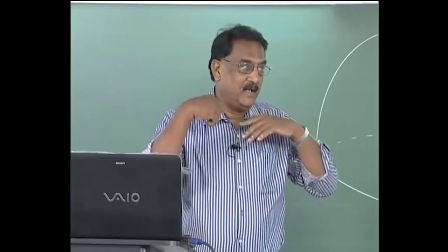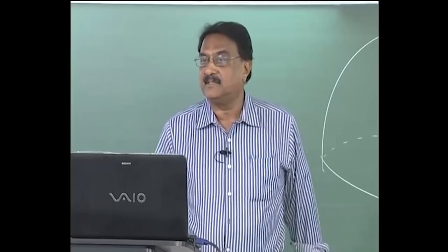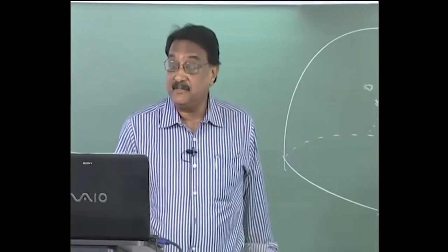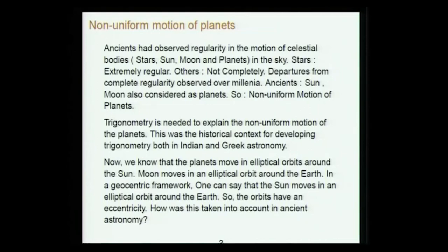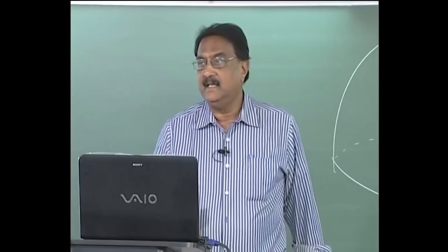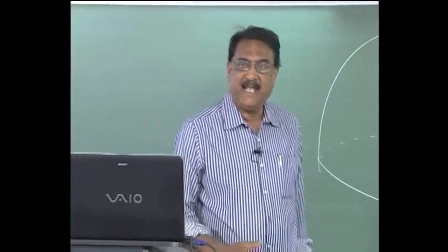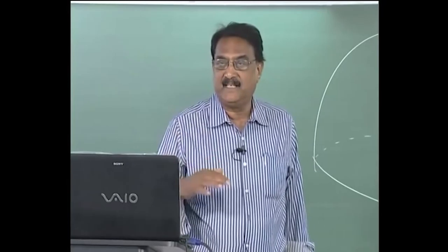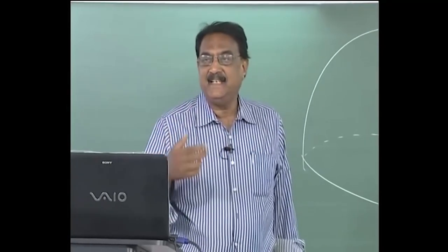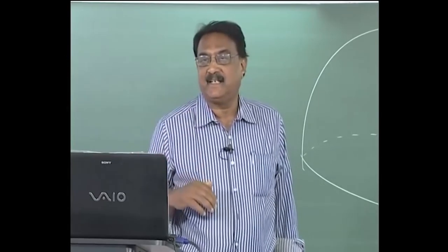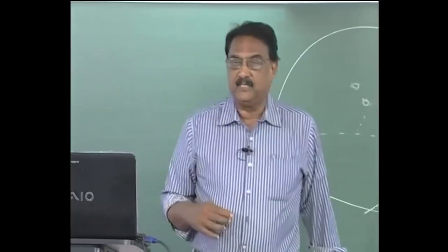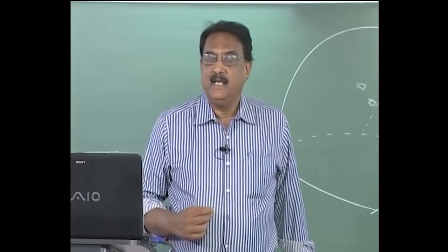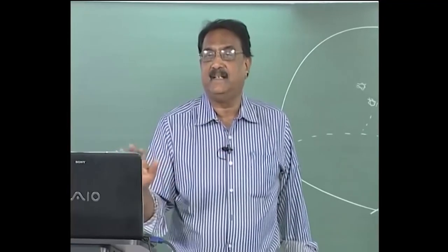If you trace a path, the sun, moon, and planets will be moving in the background of the stars from west to east — an eastward motion. Stars are extremely regular in the sense that if you see some star at the top portion of the sky at night, say at 12 o'clock, the next day it will be in exactly the same position about 4 minutes earlier. The second next day it will be about 8 minutes earlier and so on. There is extreme regularity.